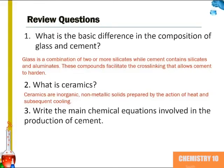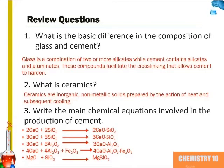Question 3: Write the main chemical equations involved in the production of cement. These are the main equations involved in the production of cement — the formation of silicates and aluminates.